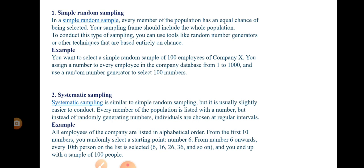For example, all employees of the company are listed in alphabetical order. You fix a starting number — say, number 6. From number 6 onwards, every 10th person on the list is selected.